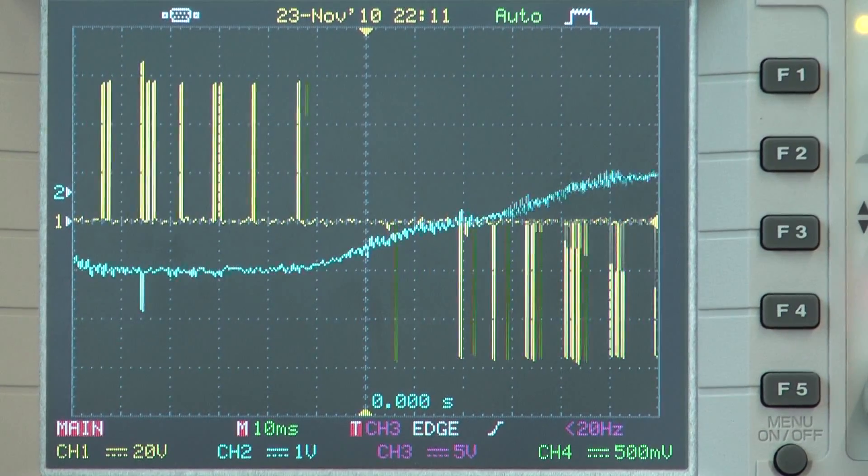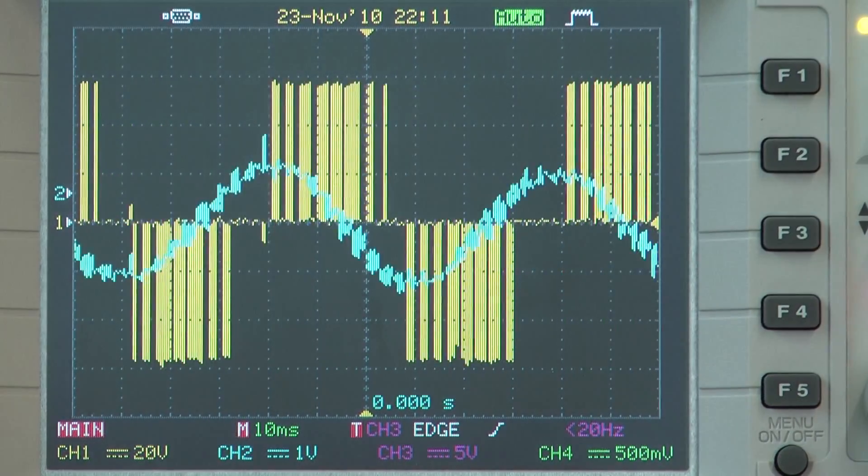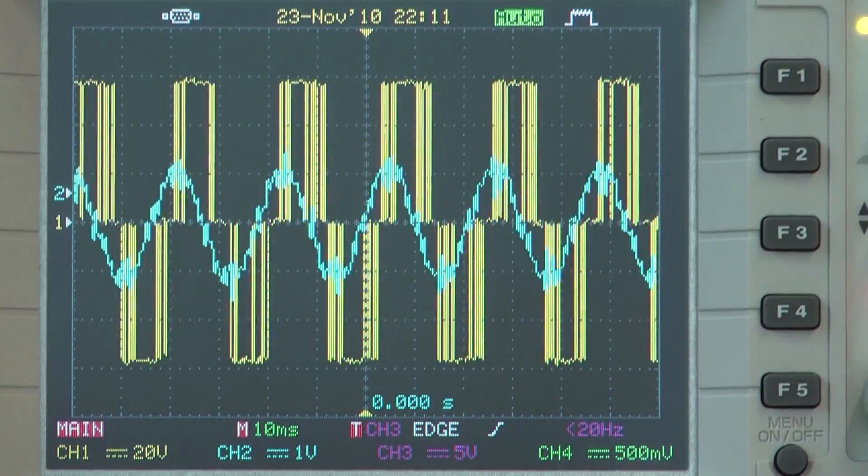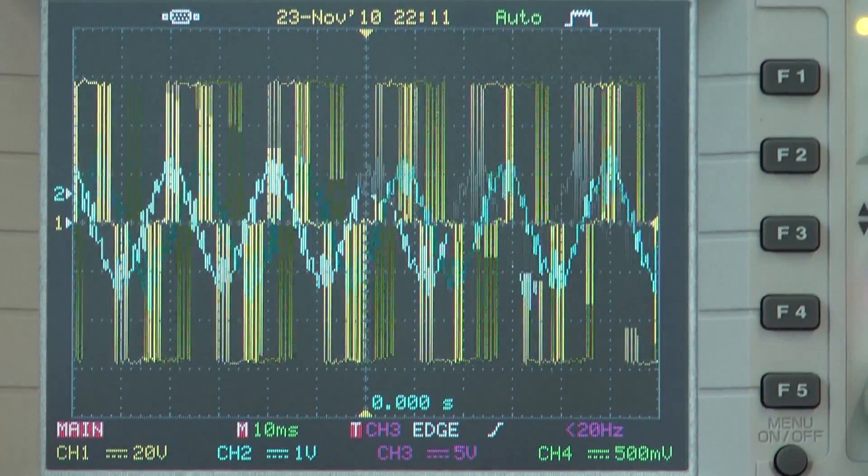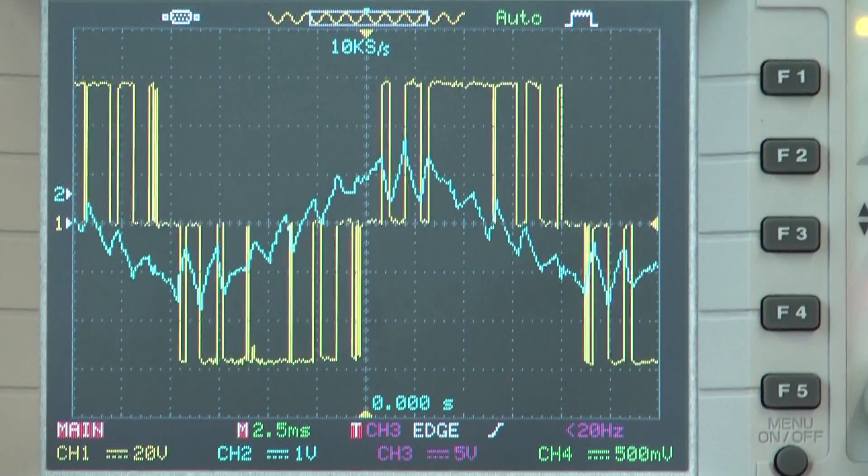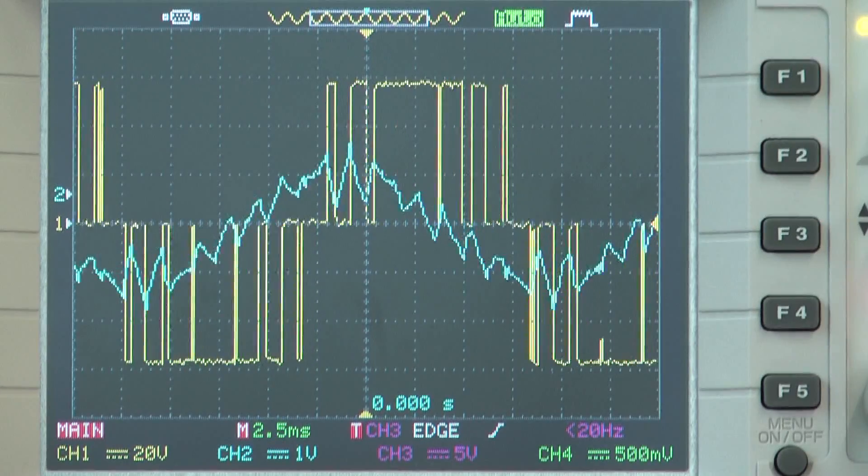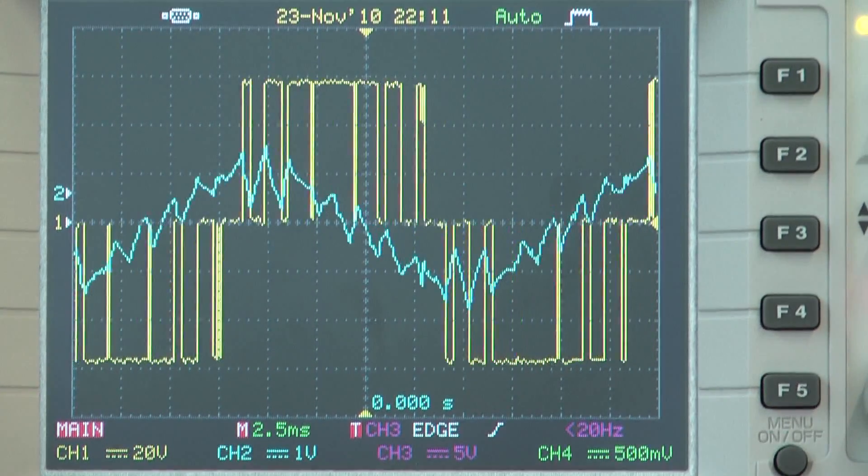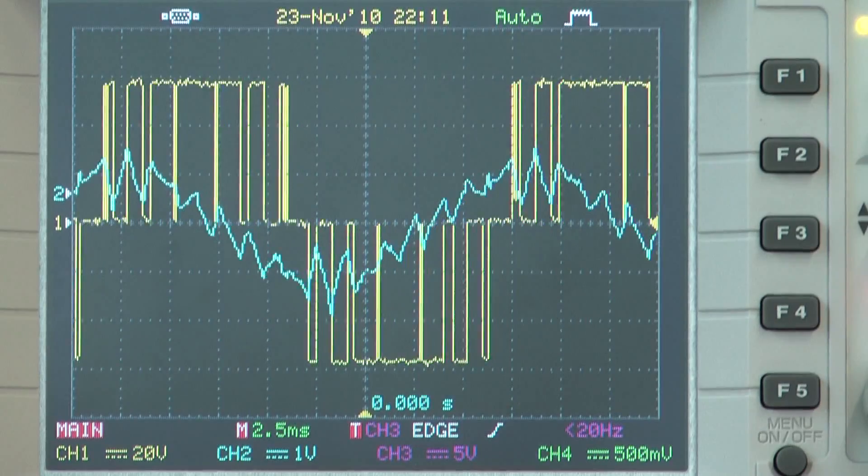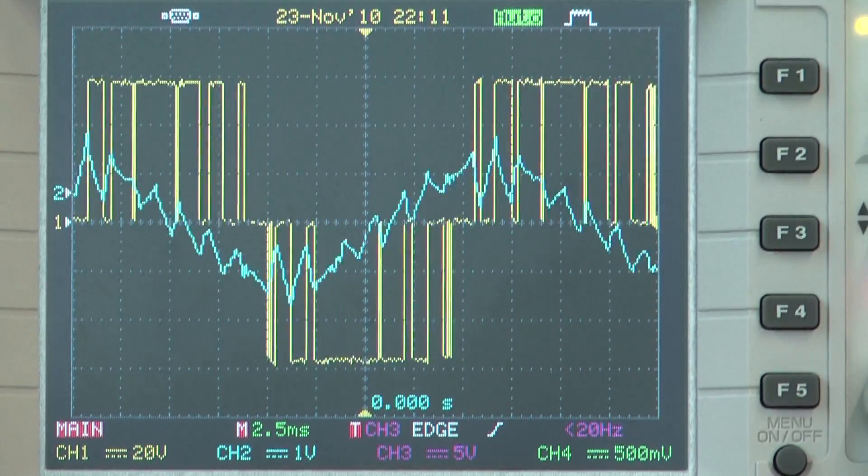And of course we can change direction with no problem at all. We're simply going the other direction. There we go, up to speed very nicely. So that's pulse width modulation in an induction motor drive with gear changing.